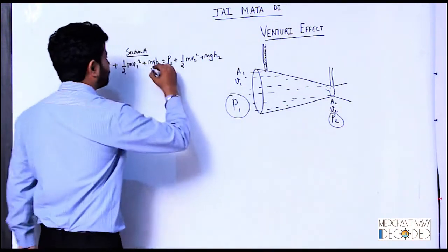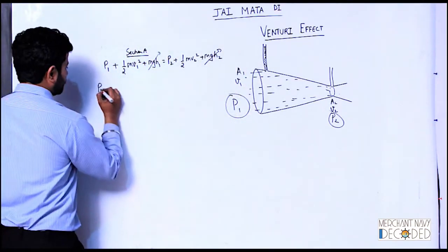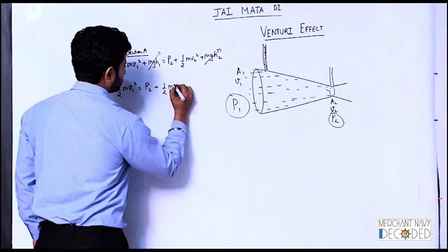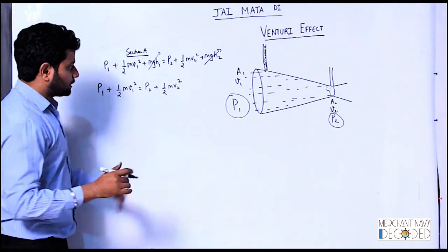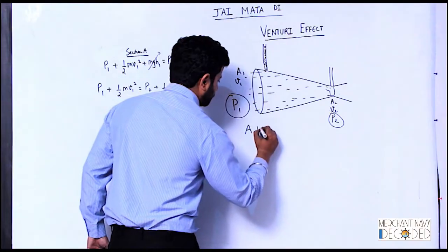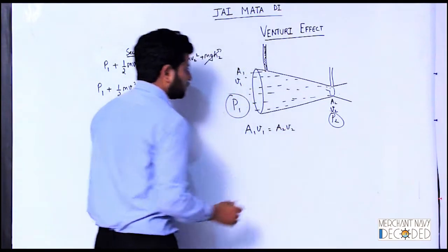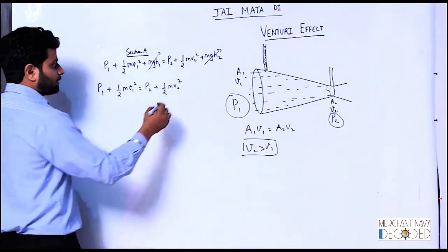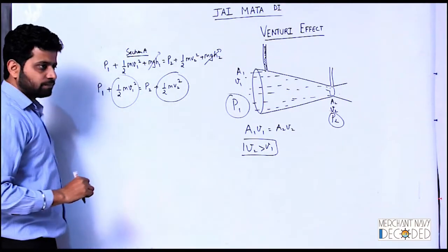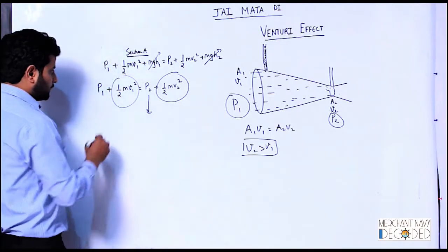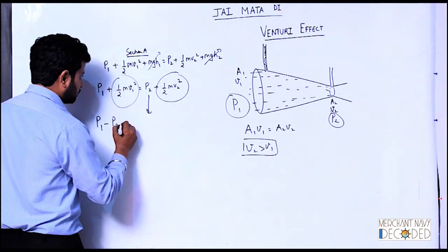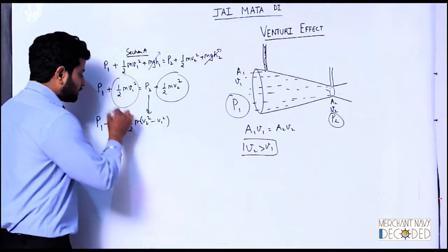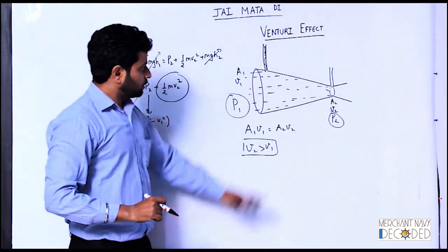Since both sections are at approximately the same level, we cancel the potential energy term. So what happens? P1 plus half m V1 squared is equal to P2 plus half m V2 squared. As per the equation of continuity, A1V1 equals A2V2. Since A1 is greater than A2, V2 will be greater than V1. If V2 is greater than V1, then P2 will be less than P1. So P1 minus P2 equals half m times (V2 squared minus V1 squared), and this is positive. That means pressure has significantly reduced when velocity increases.